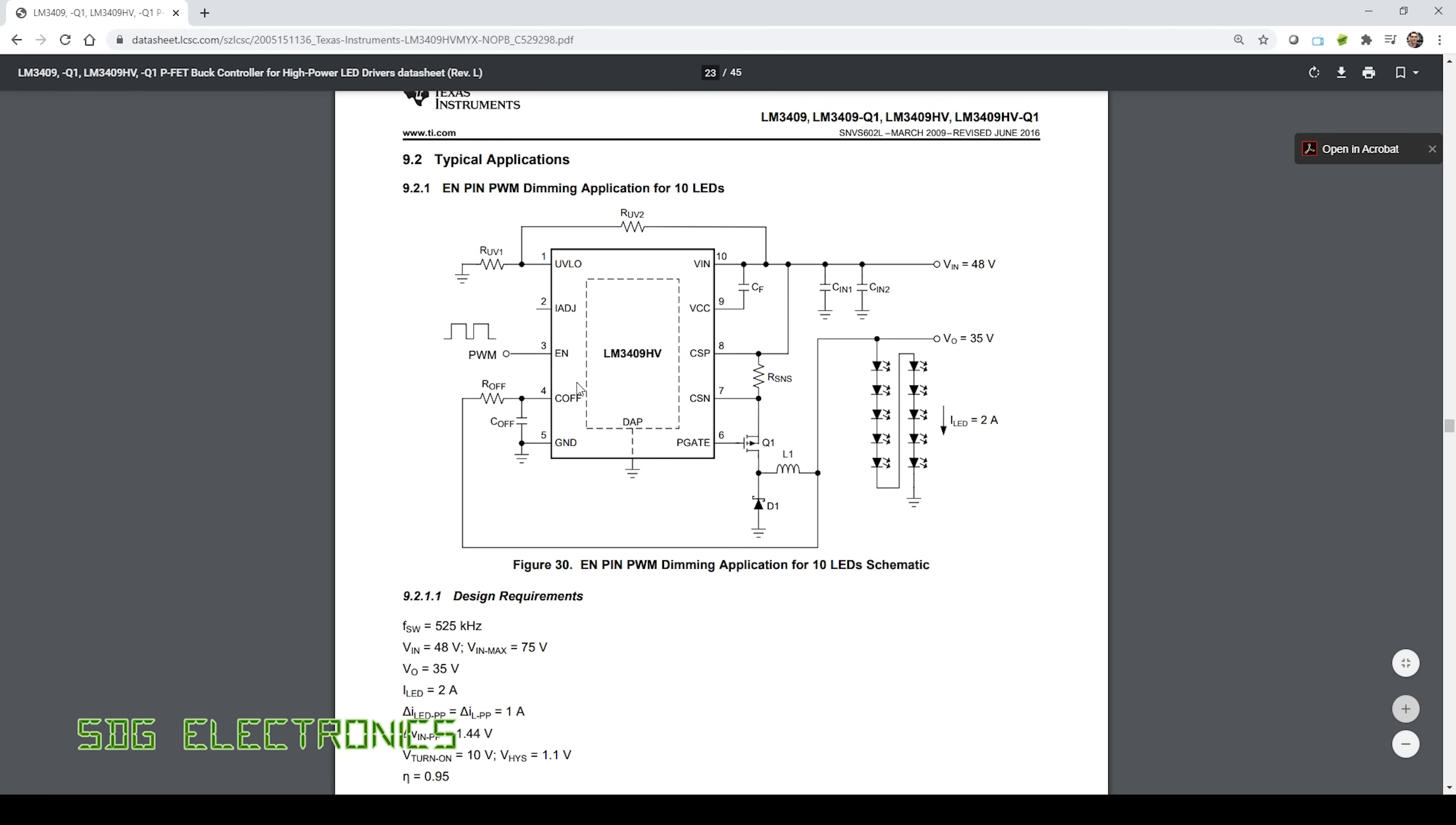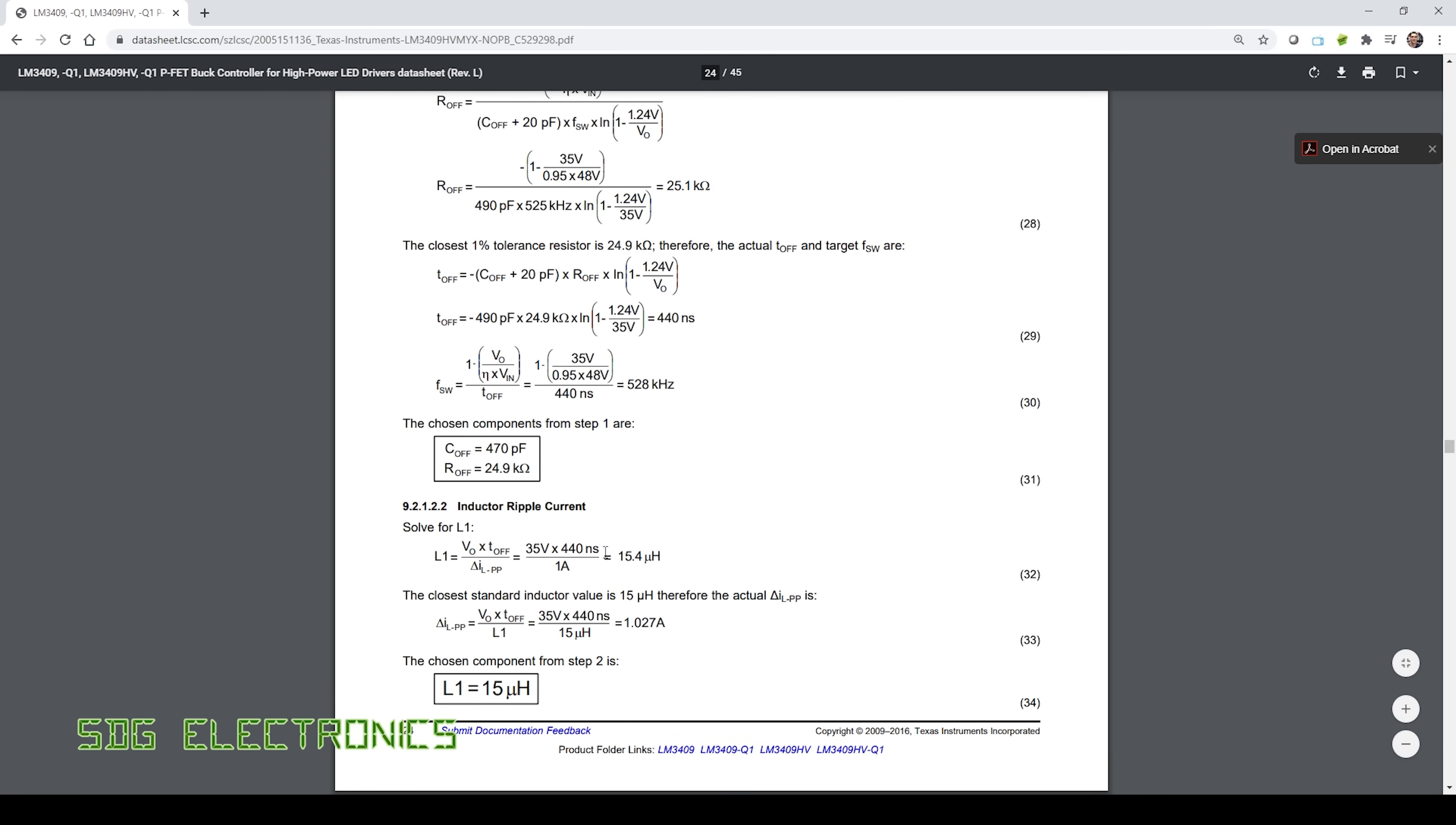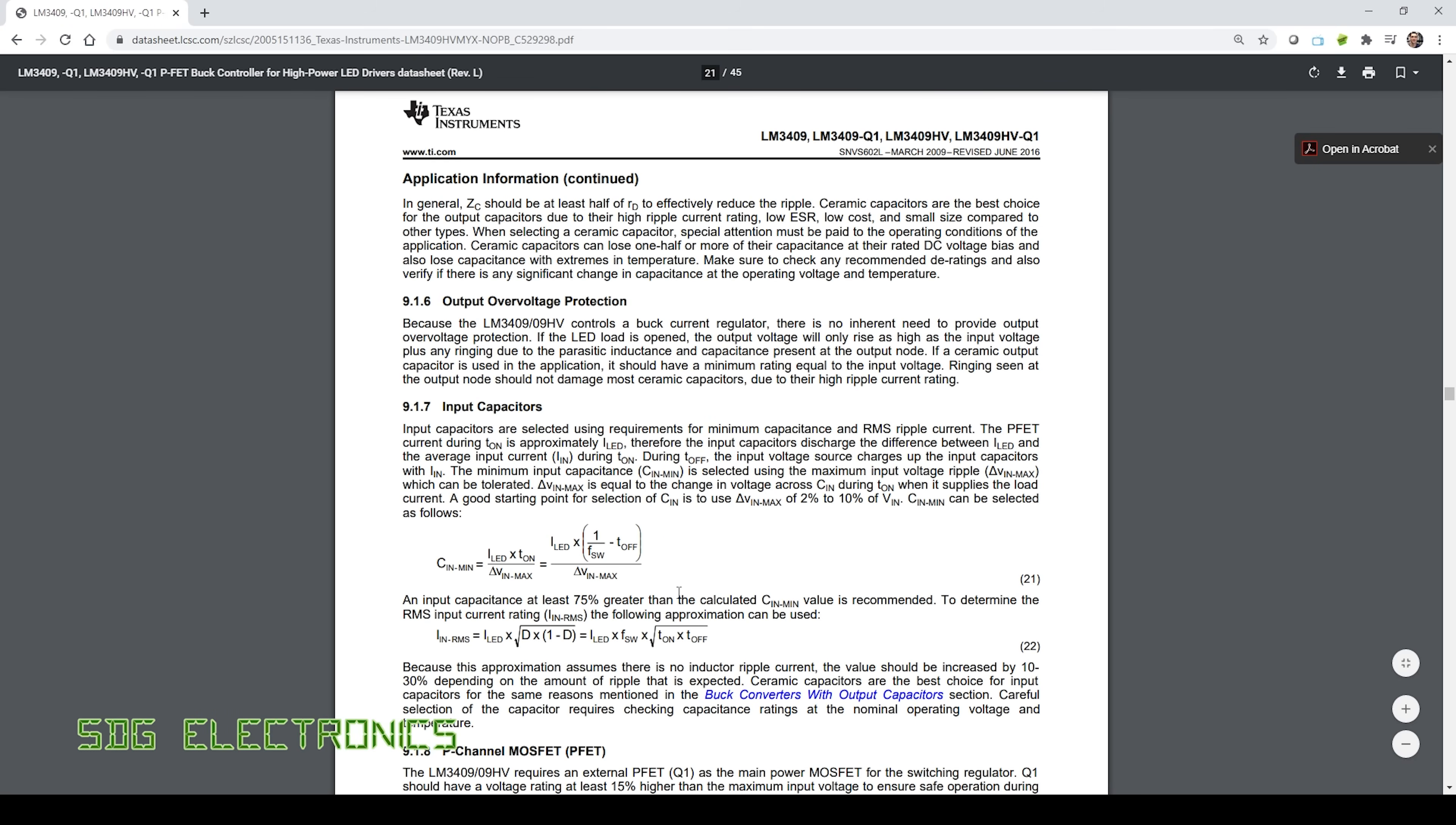As usual the Texas Instruments data sheet is really detailed and also gives quite a lot of examples for different configurations as well as all the calculations that you need to calculate the various component values. So you can go through and if you wanted to you could take their design requirements and verify your answers against how they've calculated it and then tweak it for your particular application. There are just all of the equations in the earlier stages showing how to calculate the different component values and what they all mean.